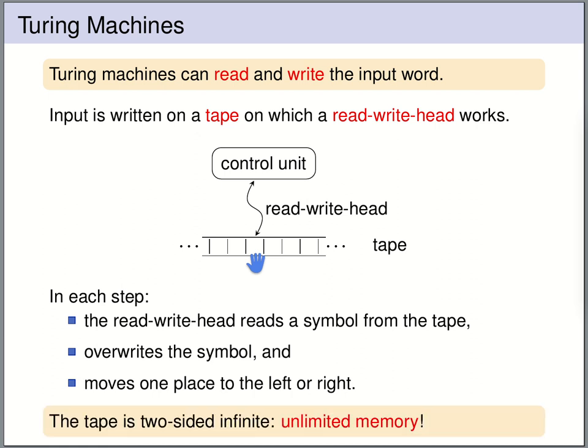The tape is assumed to be infinite in both directions — the idea is just that we want to have unlimited memory. With a finite computation, the machine can only visit finitely many cells, so it will effectively only use a finite amount of memory. But we don't want to limit the memory from the start, so whatever memory the Turing machine needs for a computation, we make it available.